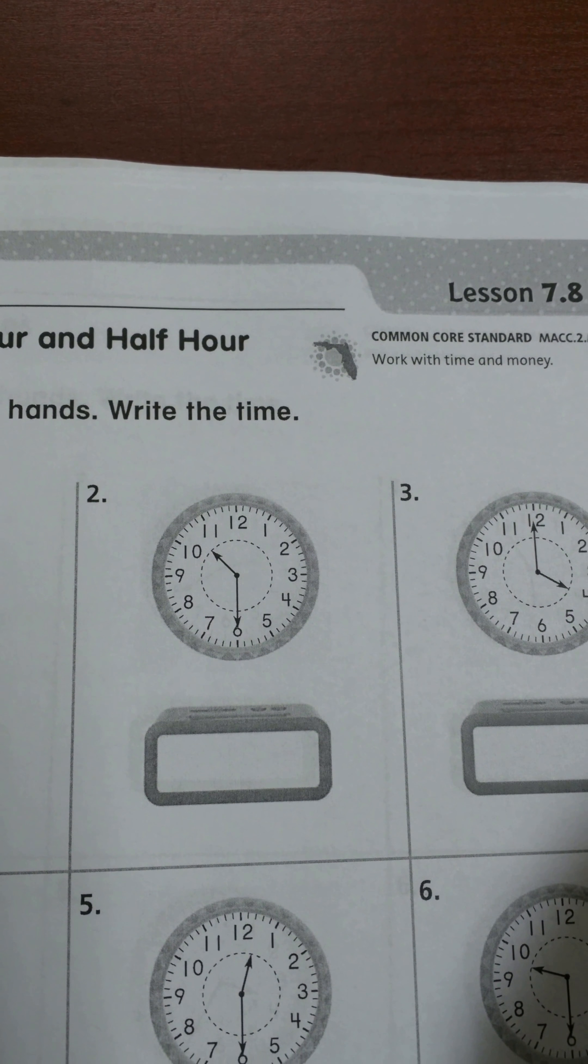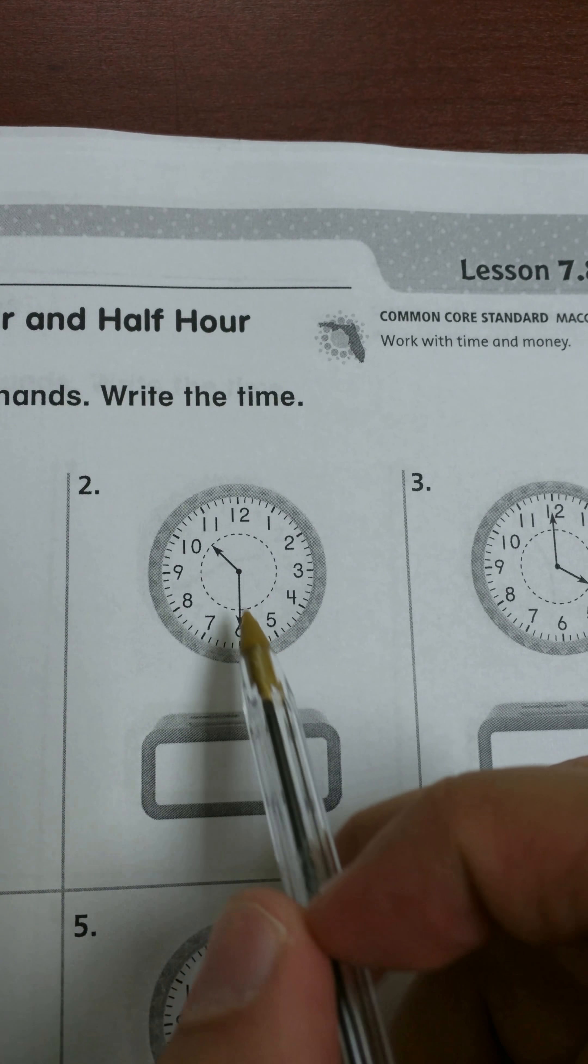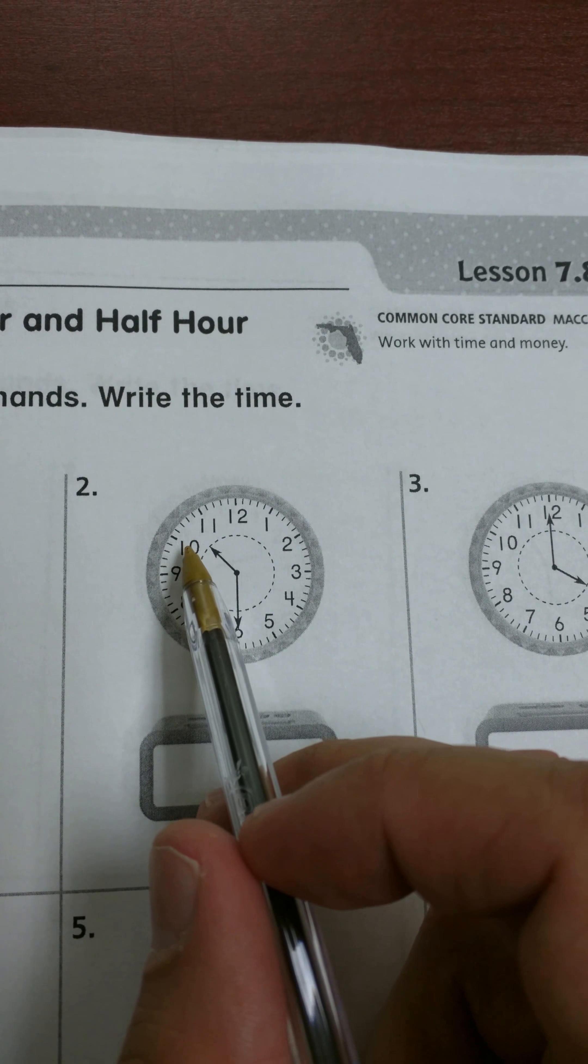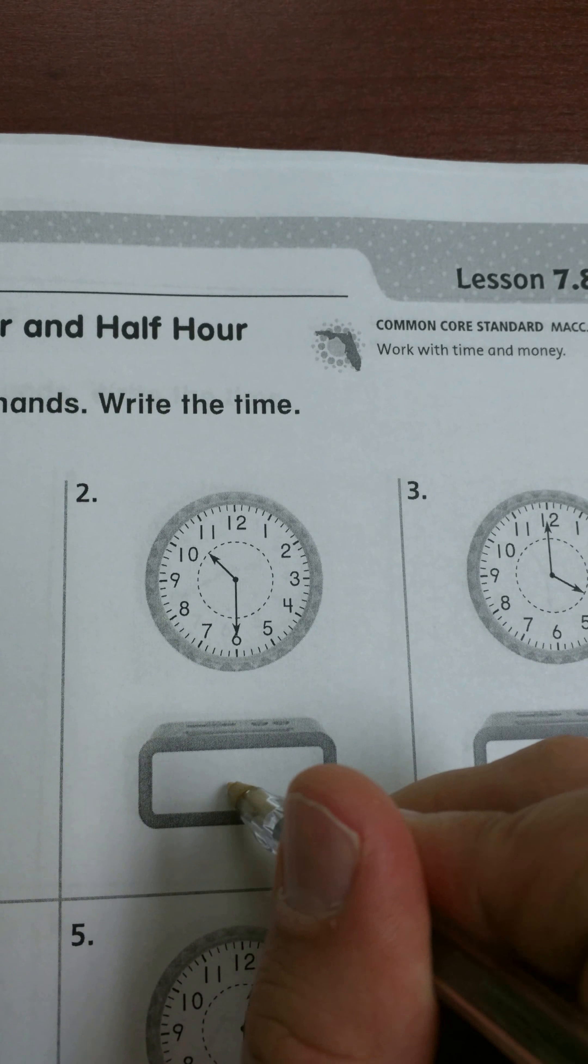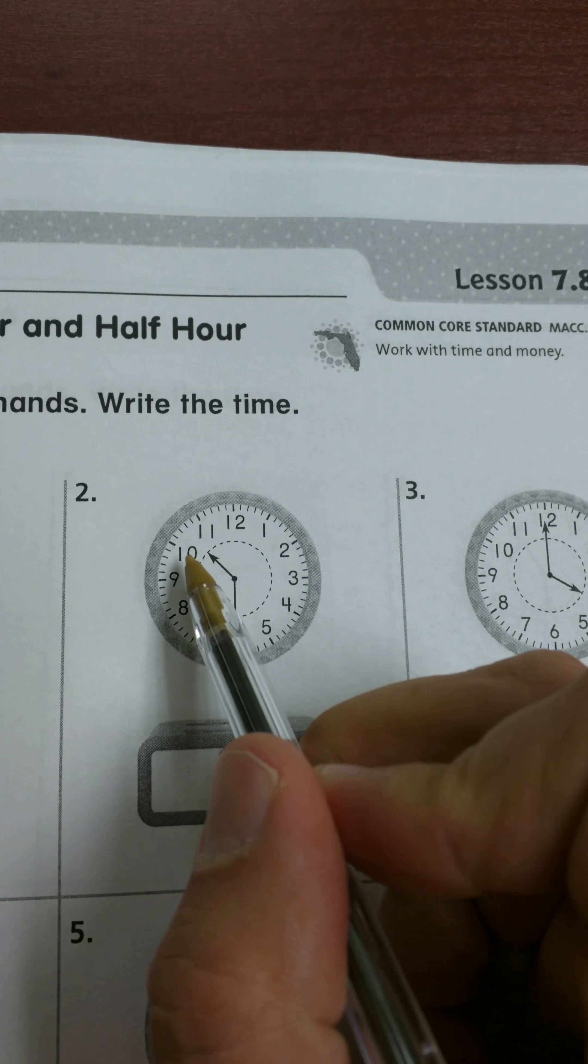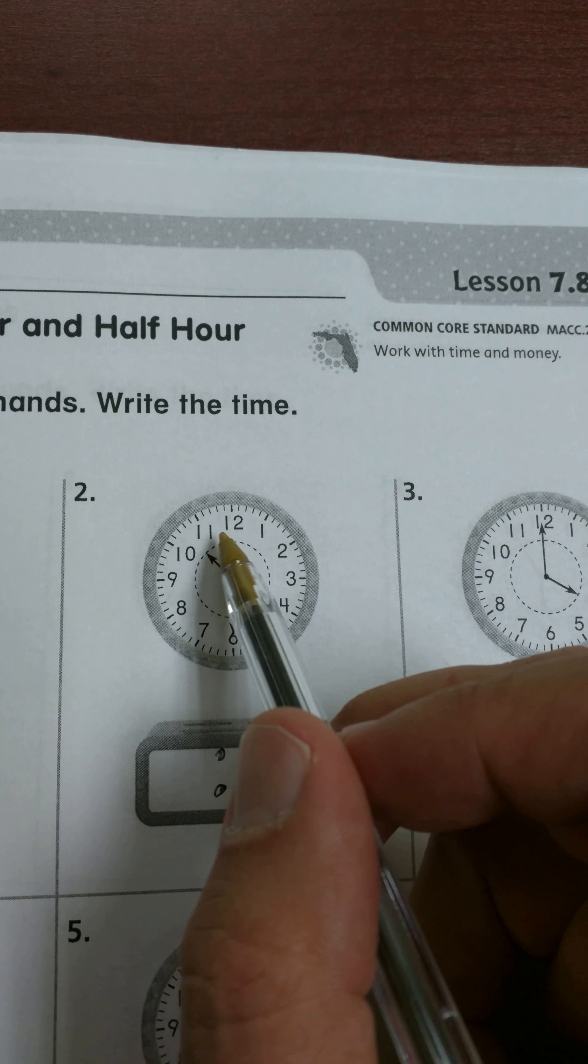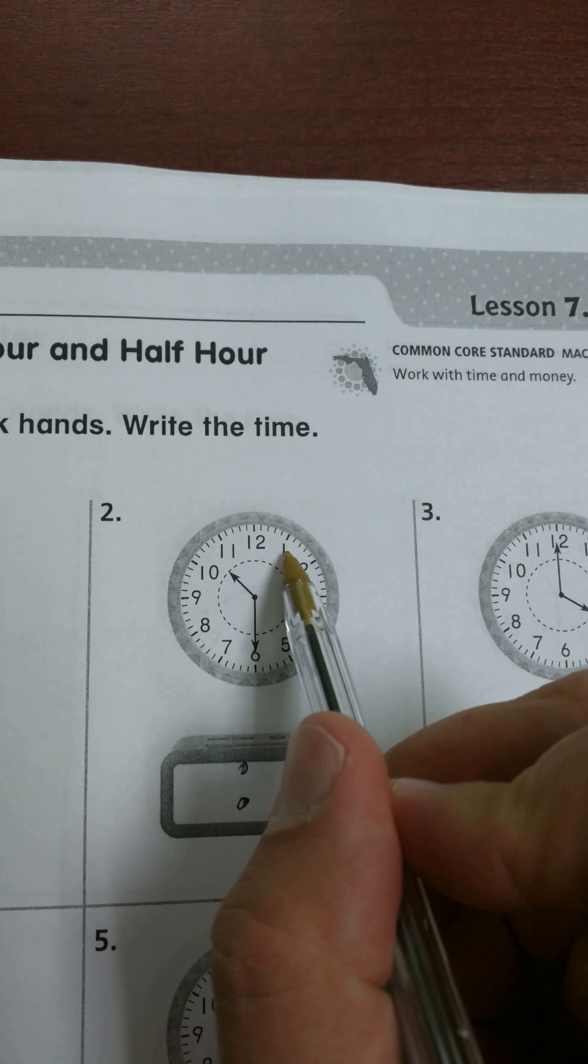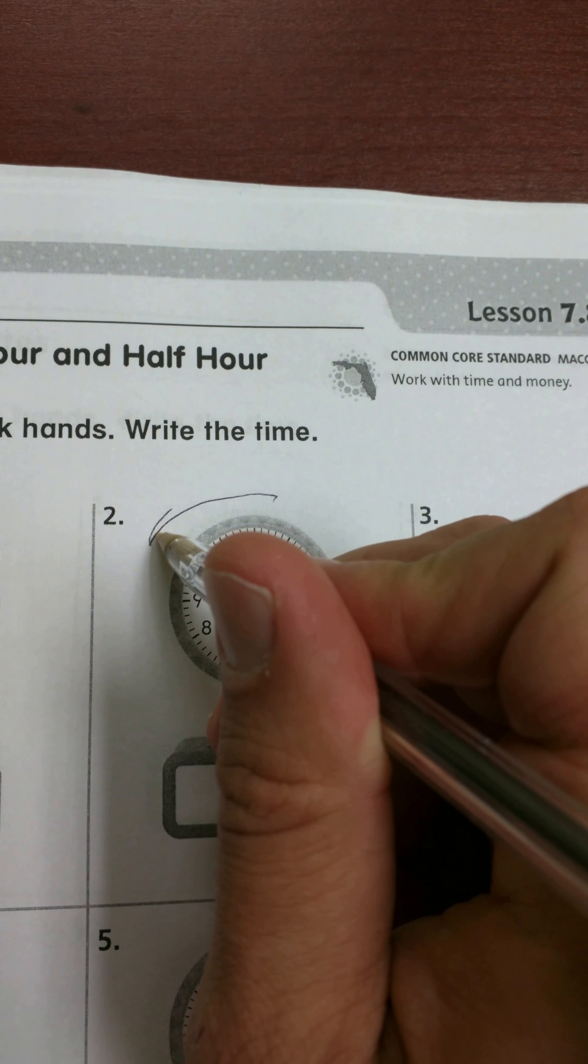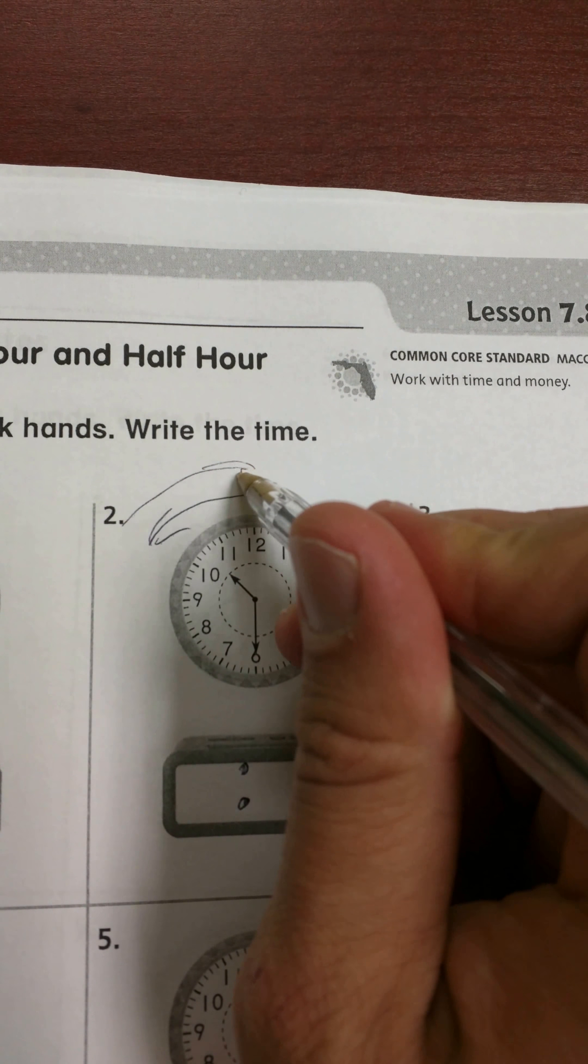If I look at number two, it's a little bit different. I see the short hand, the hour hand, is between two different numbers, the 10 and 11. Whenever we have that, we always go back counterclockwise. We always go this way to find the actual hour, even though the clock is actually moving this way.